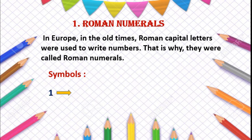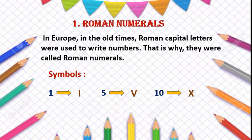For 1, they used to write capital I. For 5, they used capital V. And for 10, they used capital X. Remember this: 1 means I, 5 means V, and 10 means X. Keep these symbols in your mind.